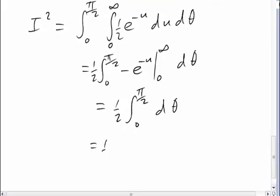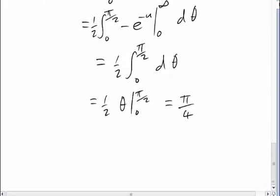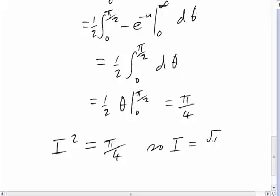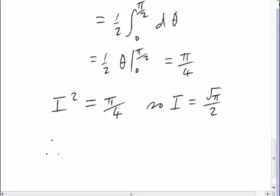Well, the rest is now trivial. That's just a half theta from 0 to pi by 2, and substitution of the limits gives pi by 4. So we've discovered that I squared equals pi by 4, and hence I is root pi over 2, taking square root. So our conclusion is the integral from 0 to infinity, e to the minus x squared dx is root pi by 2.